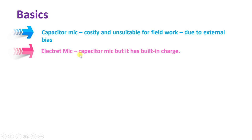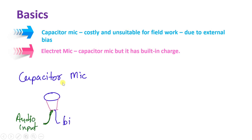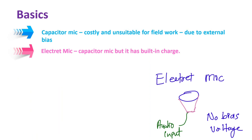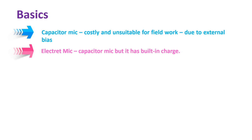In the electret microphone, it is a capacitor microphone but it has a built-in charge. Because of this built-in charge, we don't need any external bias. In a capacitor microphone, 50 to 100 volts of external bias were required, making it unsuitable for field use. With the electret microphone, we have a Teflon material in its structure which has a built-in charge, and that built-in charge is utilized to avoid any external bias.